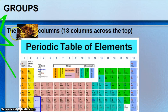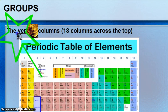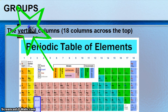Now, the other item is something called a group. In a group, these are the vertical columns. There's 18 vertical columns across the top. The vertical columns. And they're also called families.